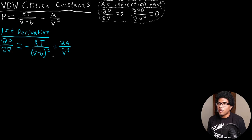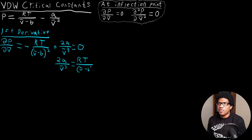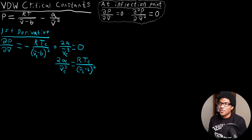Since we know this derivative is equal to zero, we can set the two terms equal: 2a over v bar cubed equals RT over (v bar minus b) squared. Specifically, I want to use the subscript C on everything because this is only equal to zero at the critical properties — critical molar volume and critical temperature.